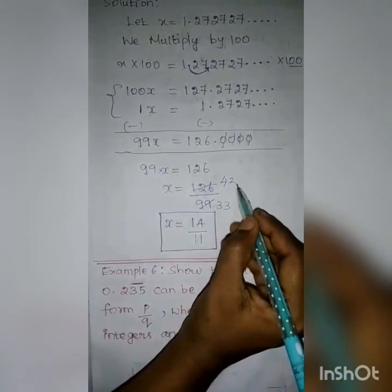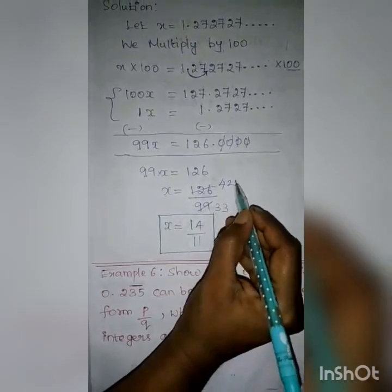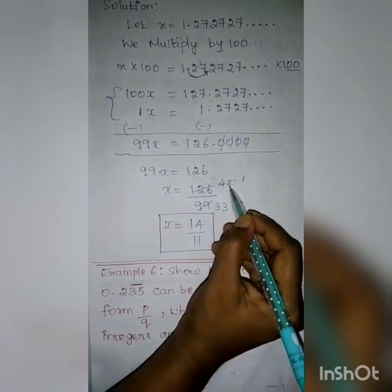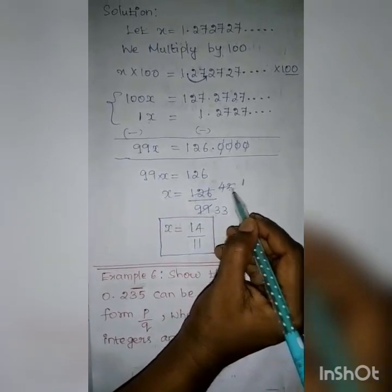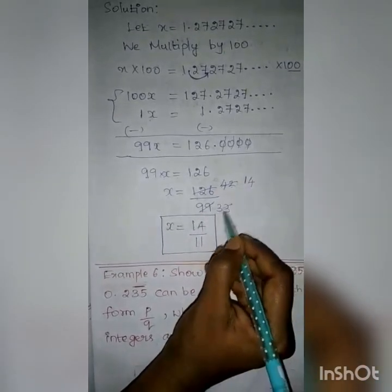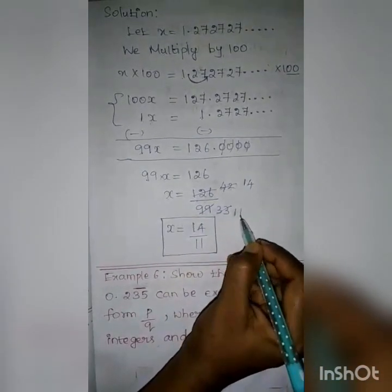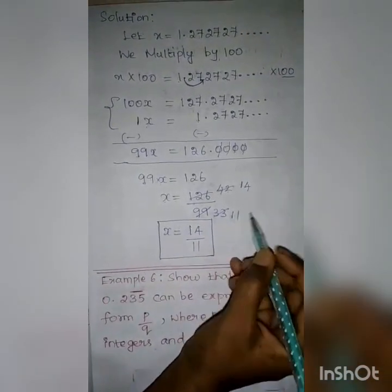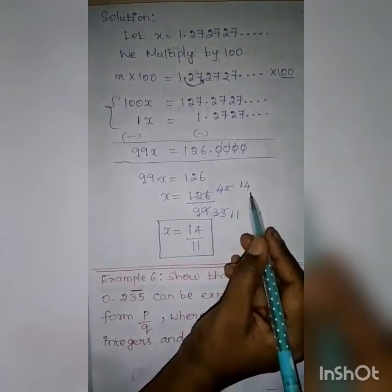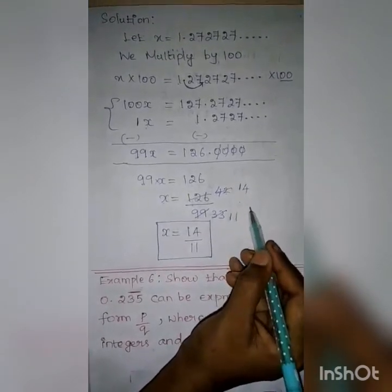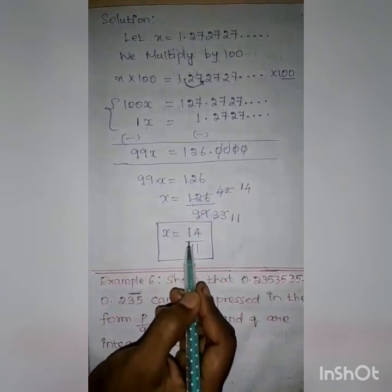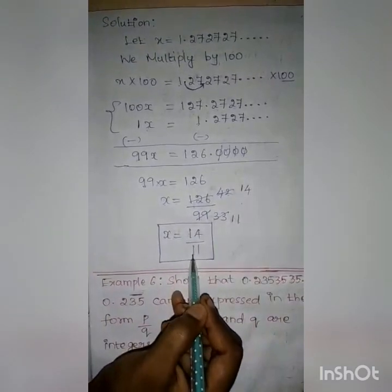Again cut by 3. 1 three is 3, remainder 1. In 12, how many 3's are there? 4 threes. 1 three is 3; 1 three is 3. So the result is 14 by 11. Here, 1 is the common factor, so X equal to 14 by 11.